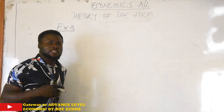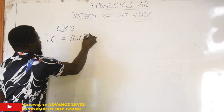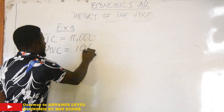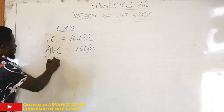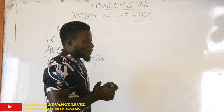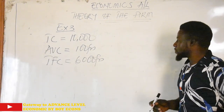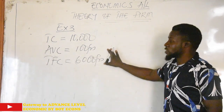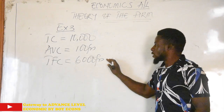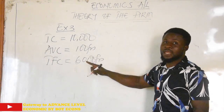Let me give you an example. Suppose the total cost of an imaginary firm is 10,000 francs, the average variable cost is 100 francs, and the total fixed cost is 6,000 francs. They ask you to calculate the output. The approach is to find a formula where you have two known values and only output as the unknown.